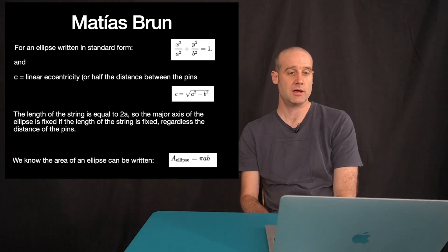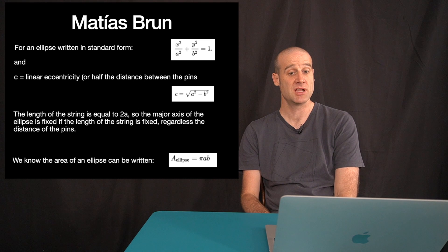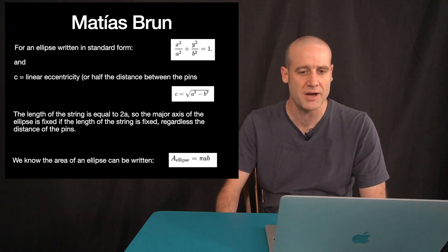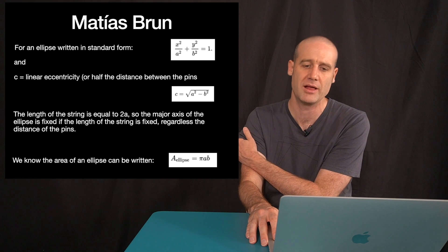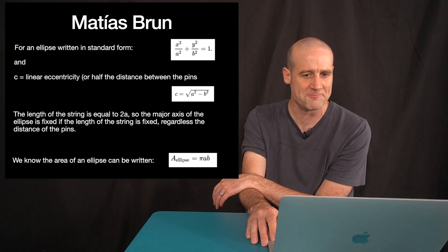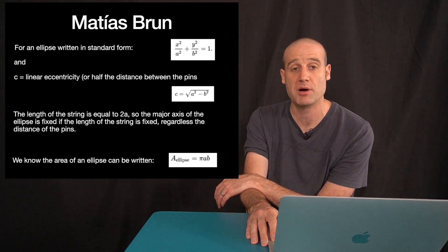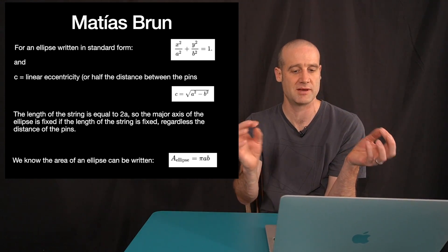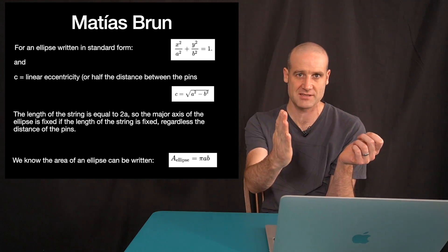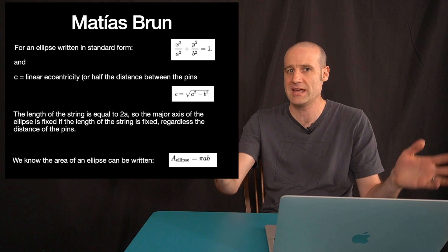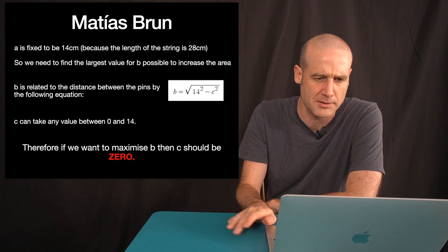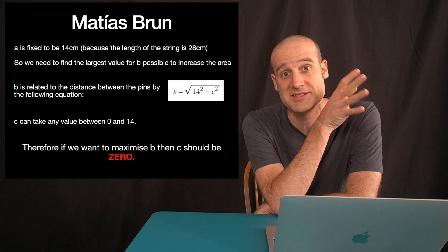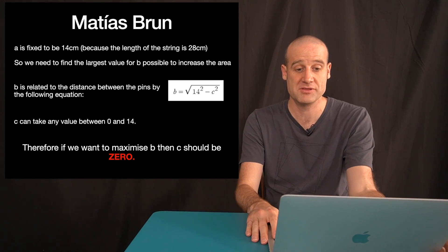People did send in a bunch of maths. Matthias sent in some calculations. First, he took the general equation for an ellipse: x²/a² + y²/b² = 1. The area is πab, so the area gets bigger if you maximise both a and b. However, in this case you're limited by the length of the string — a is fixed based on the string length, it doesn't matter where you move the pins. But b is the square root of 14² minus c², which you maximise if c is zero. So c is zero, and the pins are both in the middle.